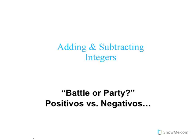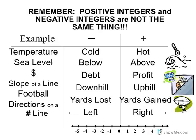We've got battle and party, or positivos versus negativos. Let's talk a little bit about positive and negative things. Some negative things: cold temperature, below sea level, being in debt, downhill slope of a line, yards lost on a football field, or left on a number line. Positive numbers: hot, above sea level, a profit of money, uphill slope of a line, yards gained on a football field, and any numbers to the right on a number line.